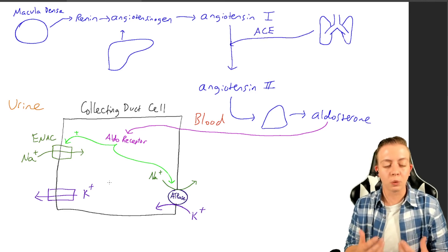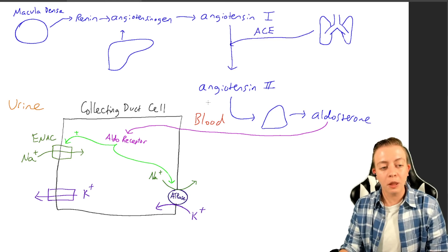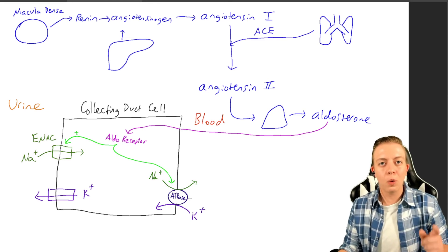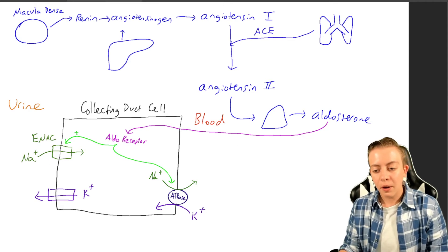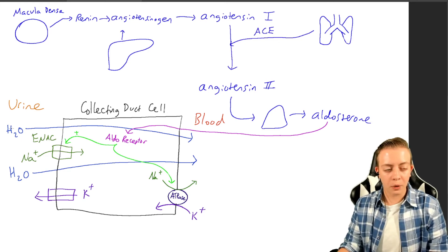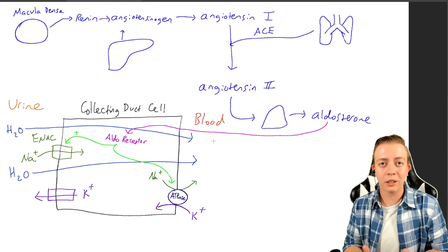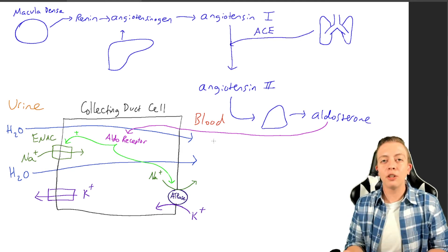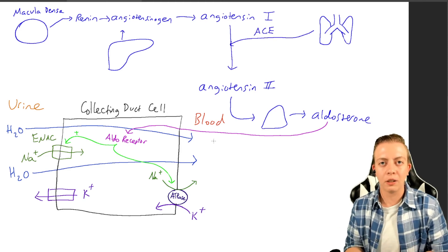By doing this, we are creating gradients — increasing sodium in the bloodstream. Because water follows salt, having more sodium in the blood causes water to flow from the urine into the bloodstream. So we're getting water to follow sodium into the blood, increasing the amount of water in the blood, increasing hydration status, and increasing blood pressure. Now that we understand how aldosterone works on the collecting duct, where does spironolactone come into play?